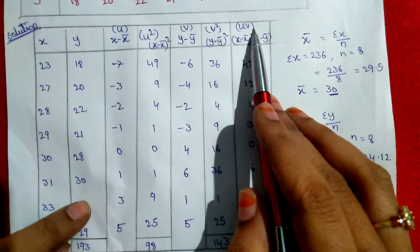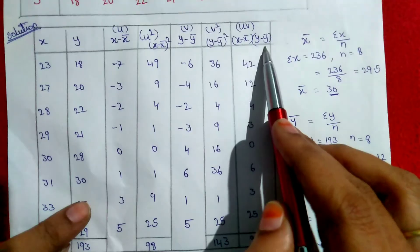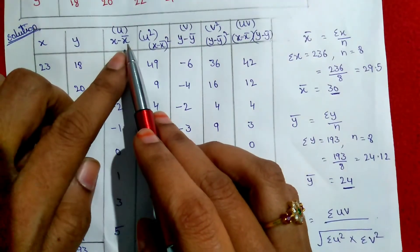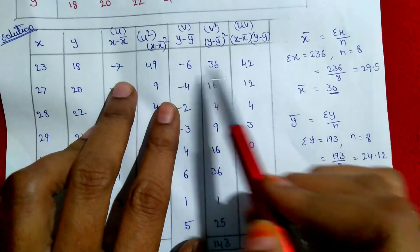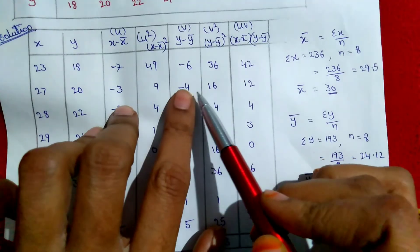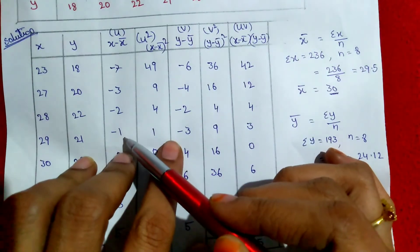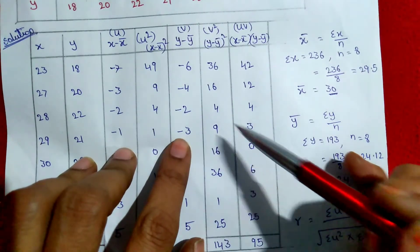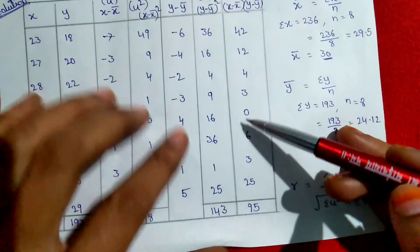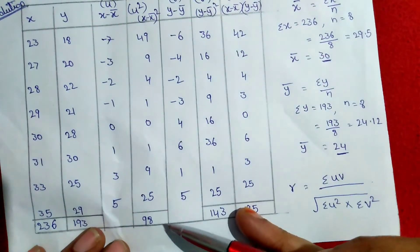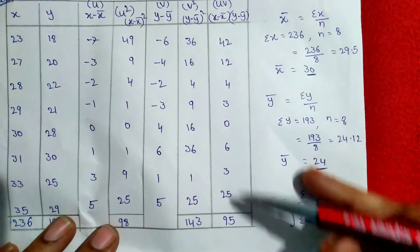After that, we calculate uv — that is, x minus x-bar into y minus y-bar. So: minus 7 into minus 6 equals 42; minus 3 into minus 4 equals 12; minus 2 into minus 2 equals 4; minus 1 into minus 3 equals 3. We multiply all u and v values. The totals are: summation u-squared equals 98, summation v-squared equals 143, and summation uv equals 95.